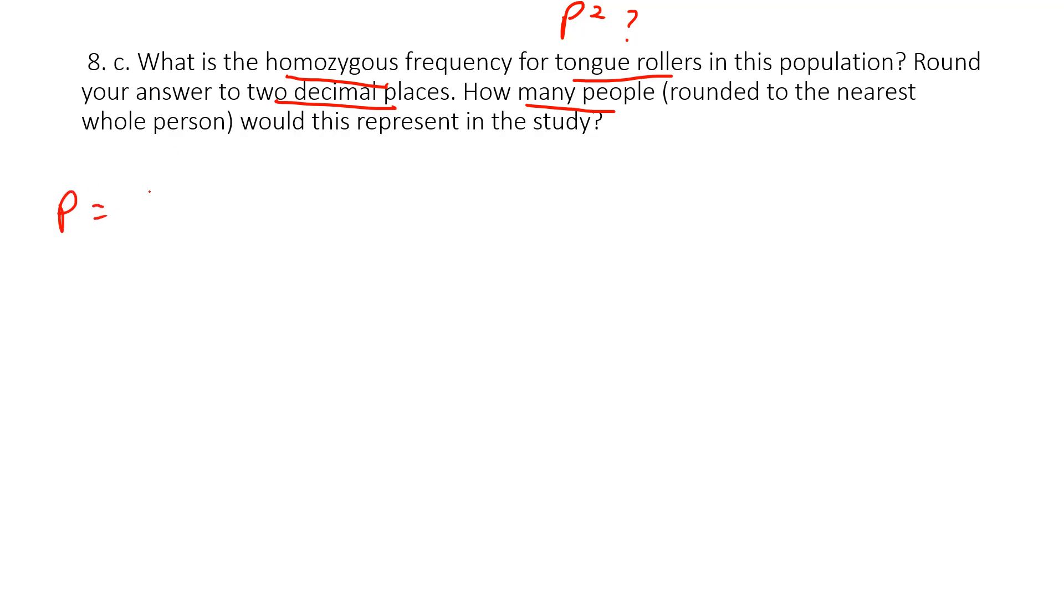Our p equals 0.4, so we just want p squared. We're going to take that 0.4 times itself, 0.4. p squared is going to equal...